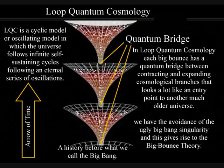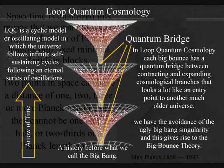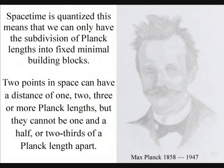In loop quantum cosmology, we have the avoidance of the ugly big bang singularity, and this gives rise to the big bounce theory. Each big bounce has a quantum bridge between contracting and expanding cosmological branches that looks a lot like an entry point to a past history that existed before the big bang. This is achieved by making spacetime quantized, meaning space-time can only be subdivided into fixed minimal building blocks of Planck lengths.